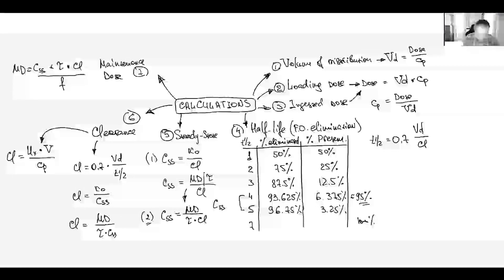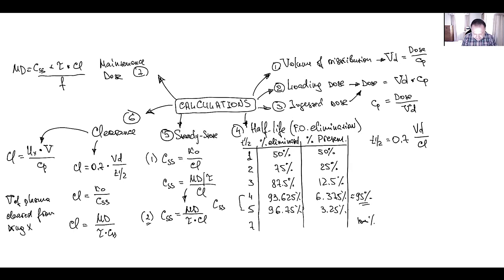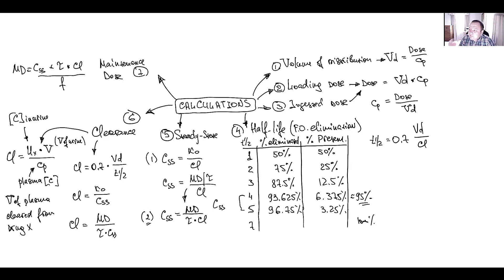To illustrate clearance: it is the volume of plasma cleared from substance X, where Ux is the urine concentration of the substance, V is the urine volume, and Cb is the plasma concentration. For example, if urine flow is 1 L/hr, urine concentration is 1 mg/mL, and plasma concentration is 10 mg/mL, you can calculate clearance from this data.